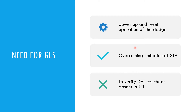The static timing constraints such as your false path or multi-cycle paths — if your timing constraints are wrong, that means you are not timing some of the paths in your design, which may lead to issues. So this is where GLS becomes important as a sign-off flow for your STA.